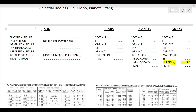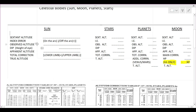First, we will see how to calculate true altitude for the Sun from sextant altitude. In the question paper you will be provided with the sextant altitude, the index error, and the height of eye. Apply the index error to the sextant altitude: if it is 'on the arc' subtract it; if it is 'off the arc' add it. After applying index error you will get the observed altitude. After that you apply dip, which is based on height of eye — that will be given in the question.